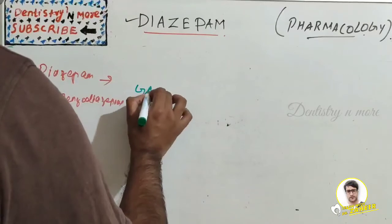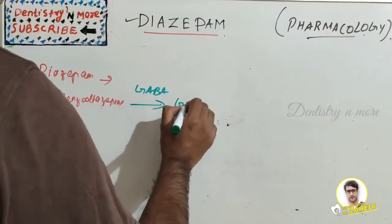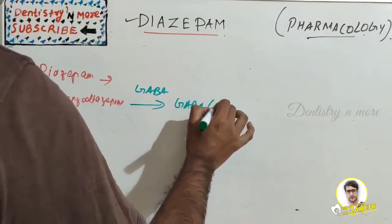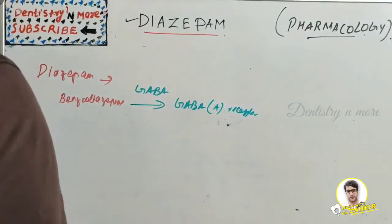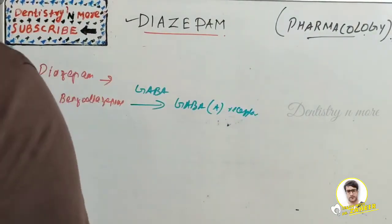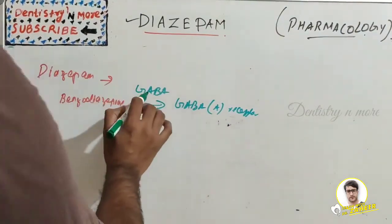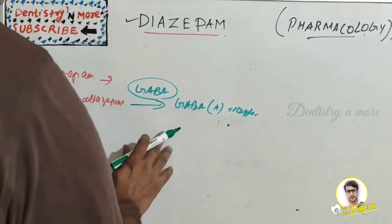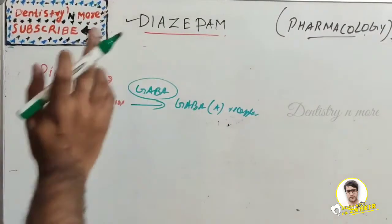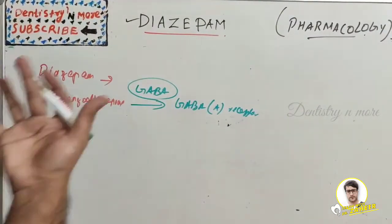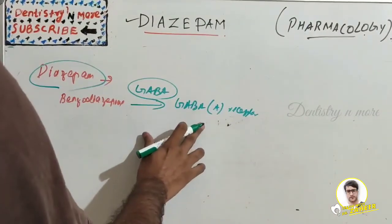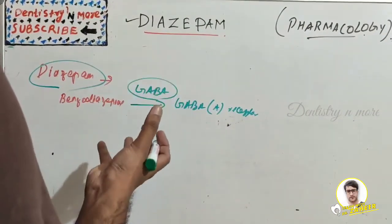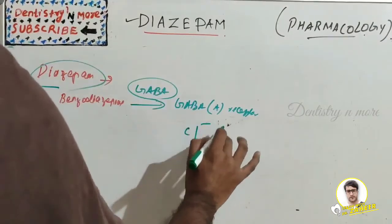There is GABA which acts on the GABA-A receptor, which is an inhibitory neurotransmitter. Diazepam regulates the efficiency of GABA at the GABA-A receptor — that is how it brings out its anti-convulsant action. The GABA-A receptor is a complex structure with chloride channels.